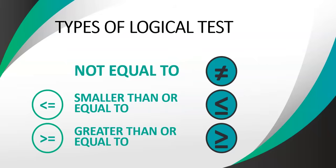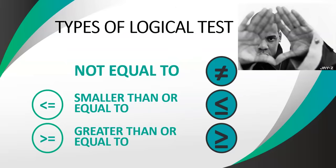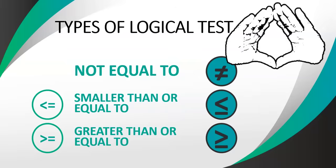Now the not equal to sign is a little bit more difficult. The way I remember it — once upon a time I went to a Jay-Z concert, and they asked us to put our diamonds in the sky. Look at the shape his hands make — it almost looks like a little diamond. So when you use the less than and greater than symbols together, you form a diamond shape like that, and that is your not equal to sign. So in an exam, just remember: Jay-Z, put your diamonds in the sky — the less than followed by greater than symbol.